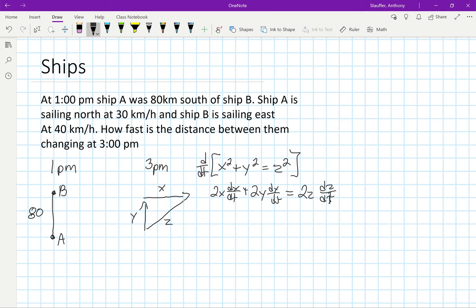What are the values we're going to have here? Looking originally at 1 pm, ship A was 80 kilometers south. If ship A is sailing north at 30 km/h, then at 3 pm, after two hours, it will have sailed 60 kilometers up, so we'd have 20 kilometers left right there. Ship B is sailing east at 40 km/h, again for that two hours, so that gives me a value of 80.